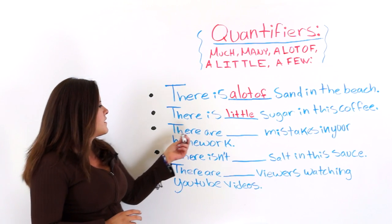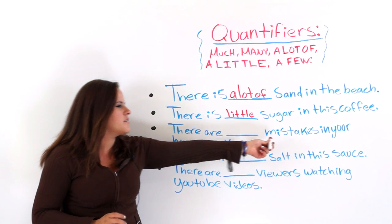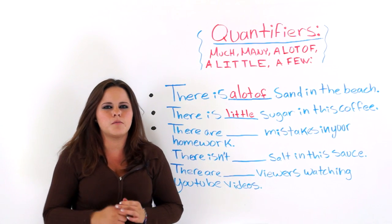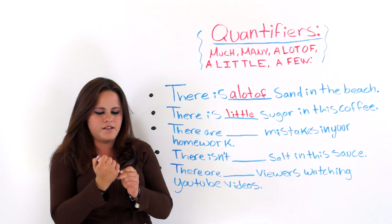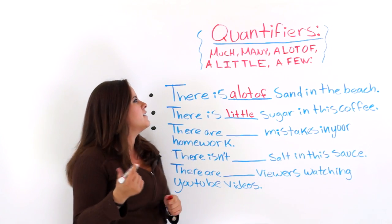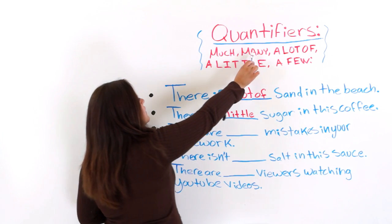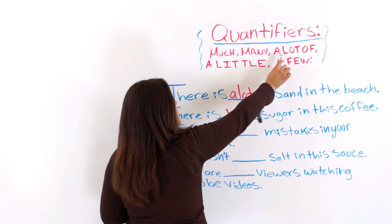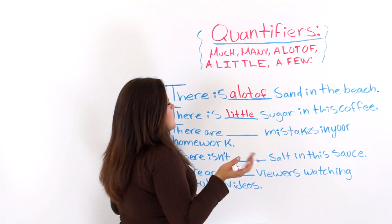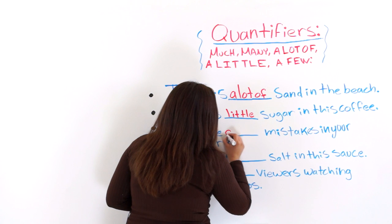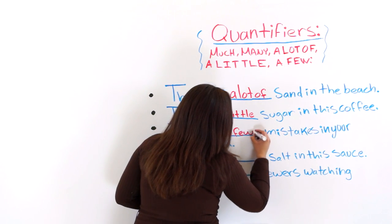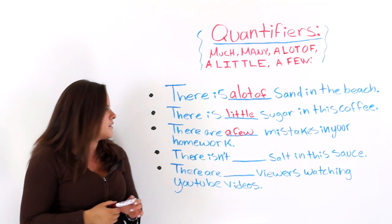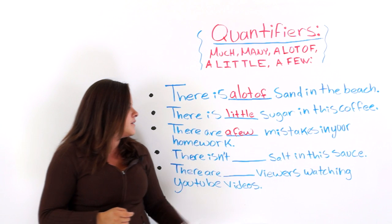Next one says: there are blank mistakes in your homework. Do you think a mistake is countable or uncountable? It's countable, right? So we can use many, or a few, or maybe a lot of — because a lot of is for both. So we're going to use a few: there are a few mistakes in your homework, because it's countable.